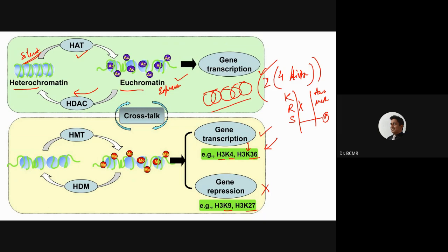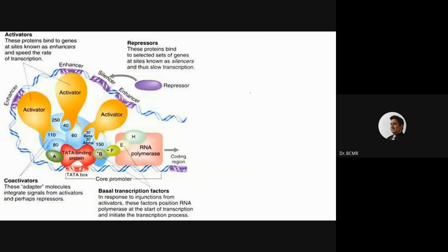The consequence of whether gene expression will happen is multifactorial. We are at the tip of epigenetics, and we should be in a position to follow the scientific literature. RNA polymerase has several general transcription factors (GTFs) or basal transcription factors, as well as coactivators, activators that bind to enhancers, and repressors that bind to silencers.